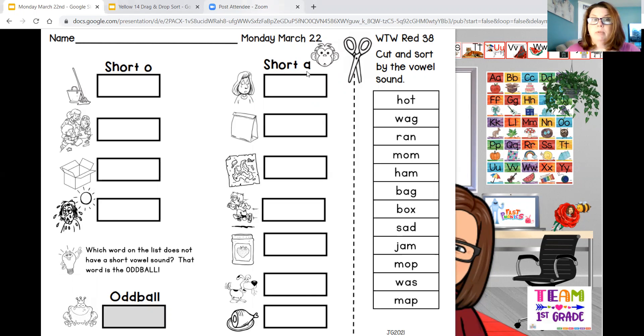But what you probably didn't notice was that there is an oddball. And what is an oddball? I think we've done maybe one or two oddballs on our list before. An oddball is a word that doesn't fall into either category. Doesn't make that short A sound and doesn't make that short O sound. So let's go through this list and see if we can find that oddball right away.